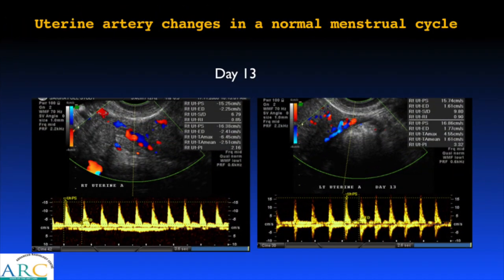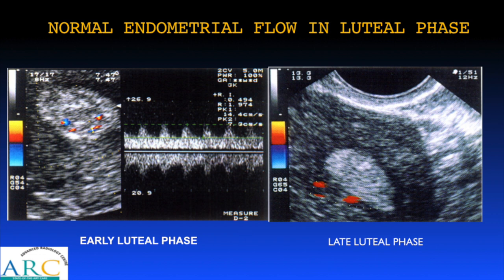The uterine artery also undergoes changes around the mid-follicular stage. The artery on the dominant side shows reduced resistance with a PI of around 2, while the non-dominant side shows a high PI of about 3. This low resistance persists through the luteal phase and rises again when there is no pregnancy. In the luteal phase, multifocal flow is seen within the endometrium with an RI of about 0.4, and in the late luteal phase just prior to menstruation, no vascularity is seen within the endometrium.